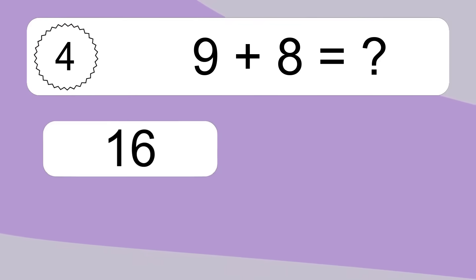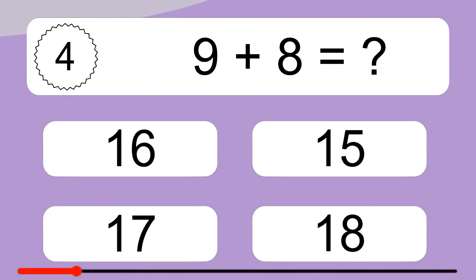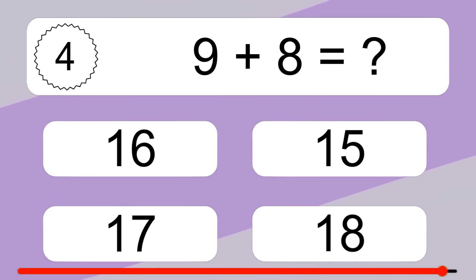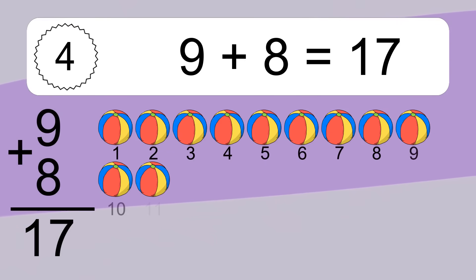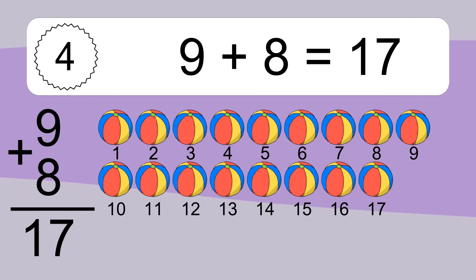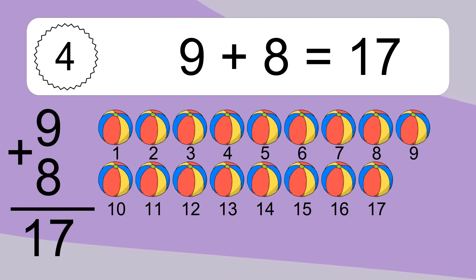9 plus 8 equals what? 9 plus 8 equals 17. Let's count it: 1, 2, 3, 4, 5, 6, 7, 8, 9, 10, 11, 12, 13, 14, 15, 16, 17.